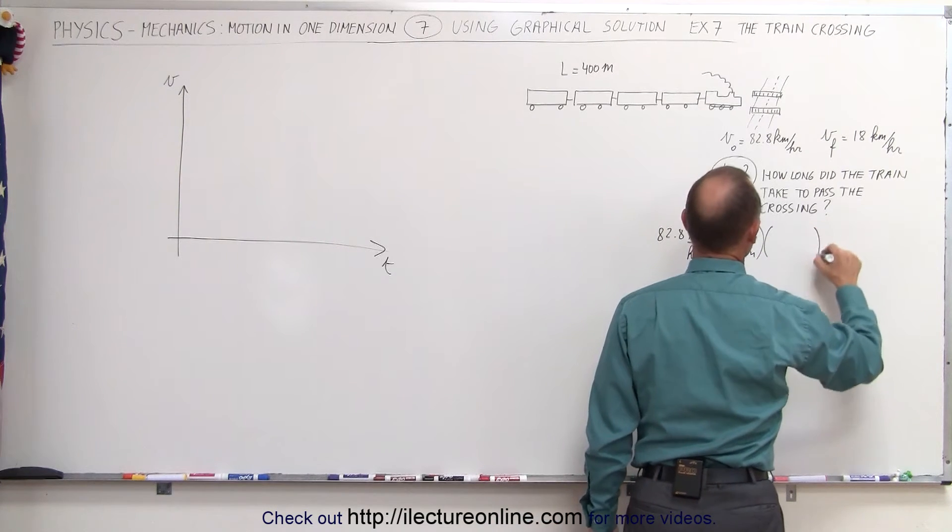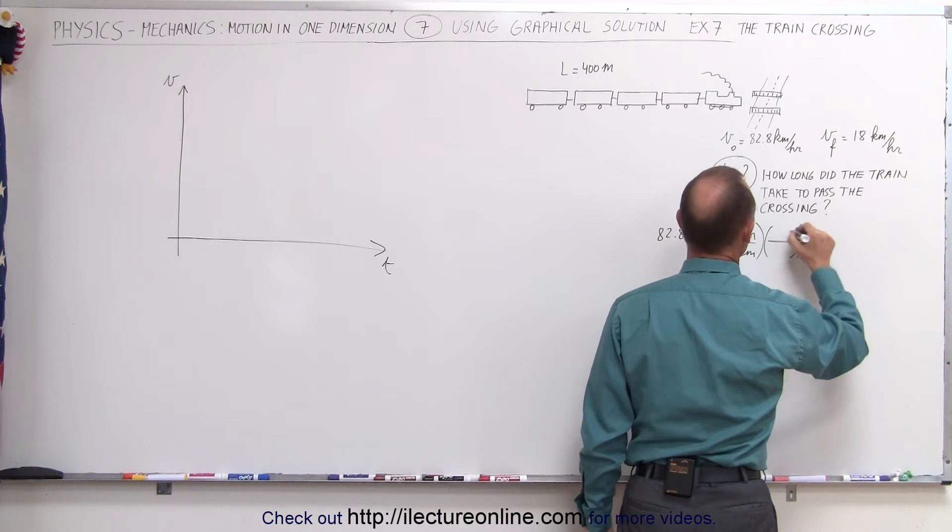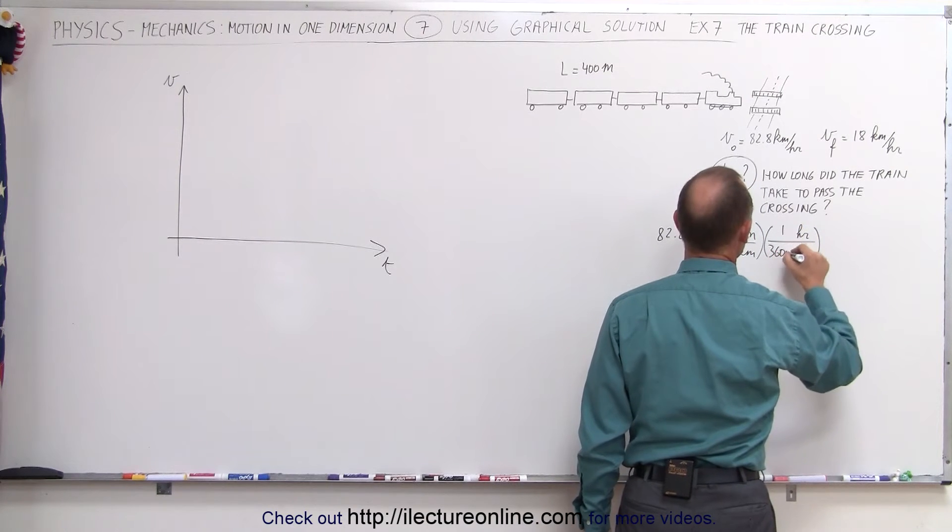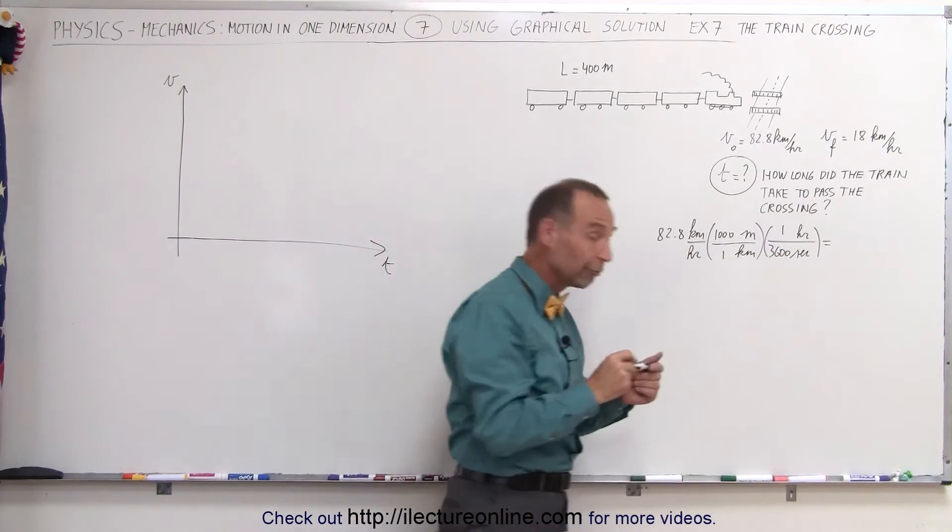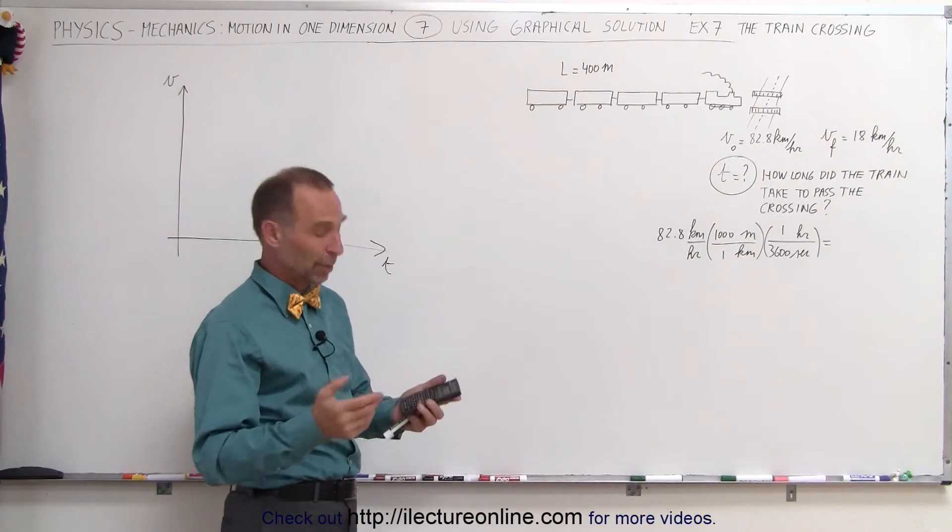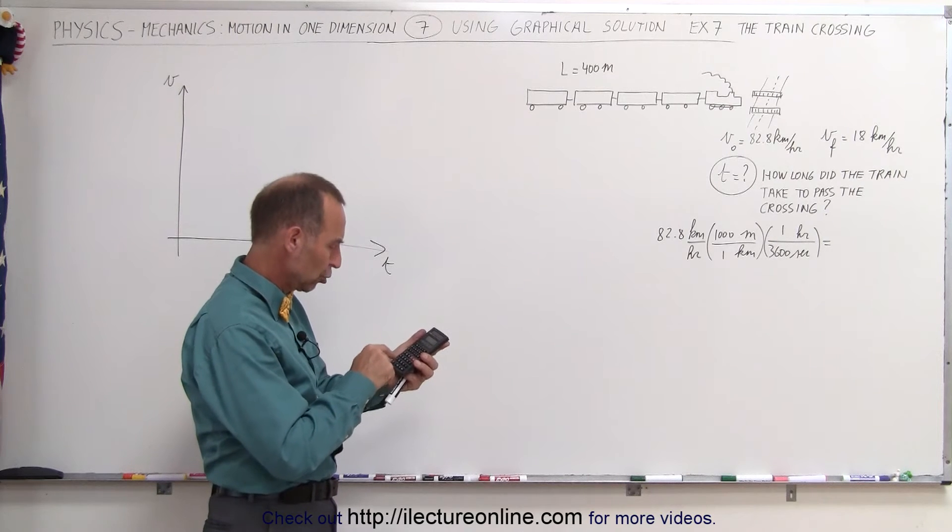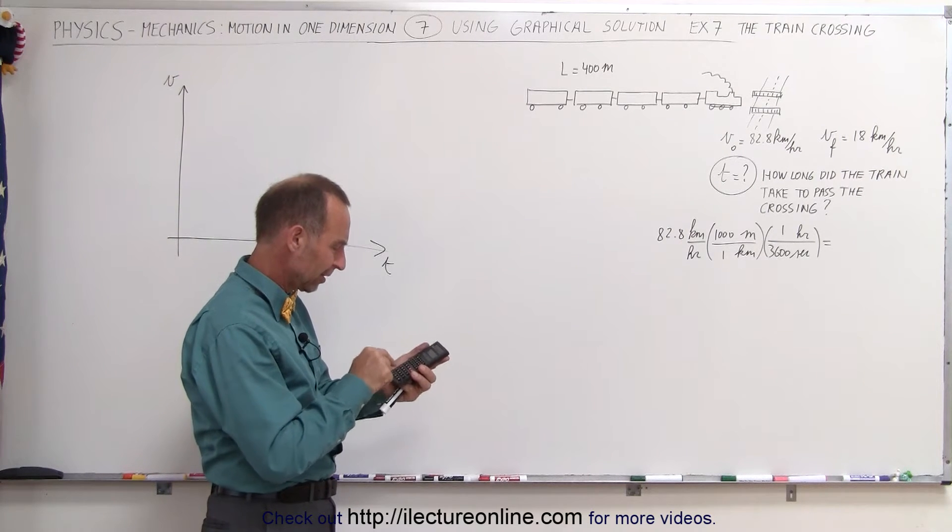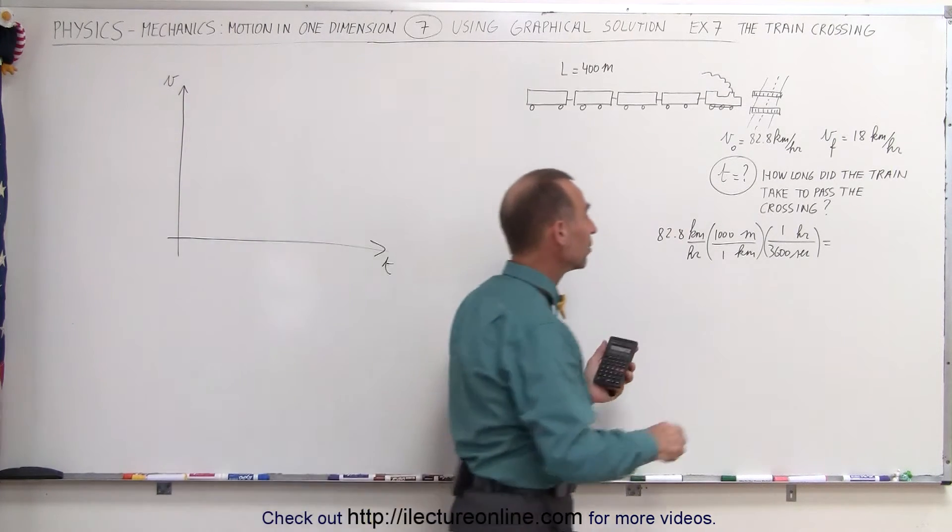And then converting from hours to seconds, seconds at the bottom, hours at the top, one divided by 3,600. Essentially, when you convert from kilometers per hour to meters per second, you simply divide by 3.6. So 82.8 divided by 3.6 equals 23 meters per second.